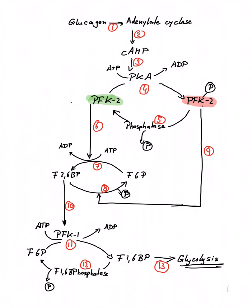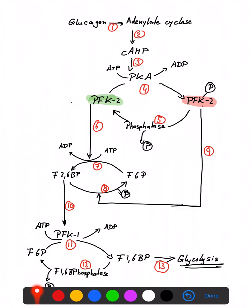Hello everybody. In this video I want to give a quick overview of how phosphofructokinase, and in particular phosphofructokinase 1, is regulated. We all know that phosphofructokinase 1 is a key enzyme in glycolysis. It catalyzes the reaction from fructose-6-phosphate to fructose-1,6-bisphosphate by transferring a phosphate residue from ATP onto the one position of fructose-6-phosphate. Because phosphofructokinase 1 is a key enzyme in glycolysis, it needs to be tightly regulated.